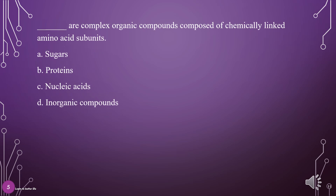What are complex organic compounds composed of chemically linked amino acid subunits? A. Sugars, B. Proteins, C. Nucleic acids, D. Inorganic compounds. The answer is B: Proteins.